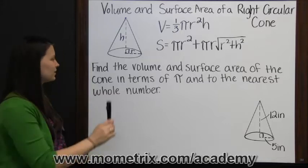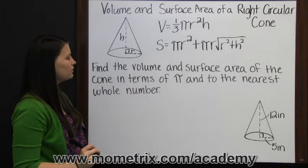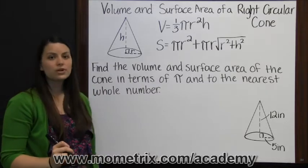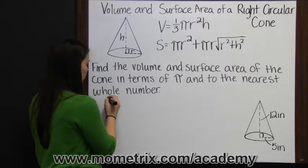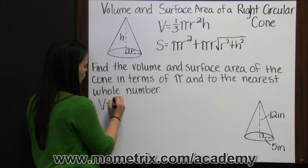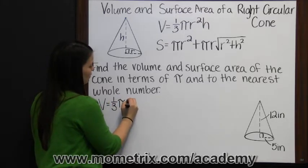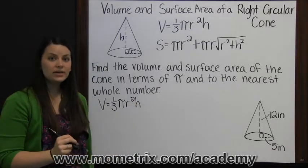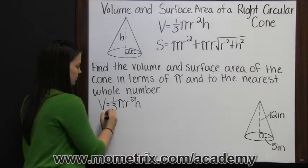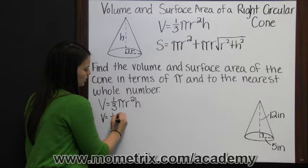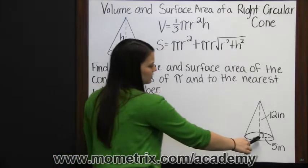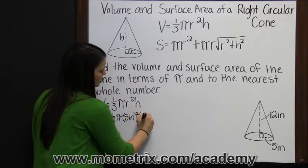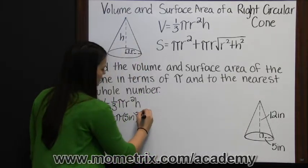Let's look at an example. Find the volume and surface area of the cone in terms of pi and to the nearest whole number. We'll start with volume. We're going to write our volume formula: volume is one-third times the area of the base, pi times radius squared, times the height of the cone. Now we need to substitute our values. Volume is one-third times pi times the radius, five inches, squared, times the height of the cone, which is given as twelve inches.